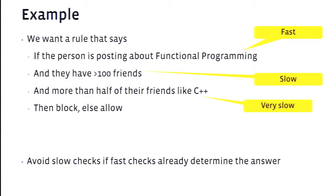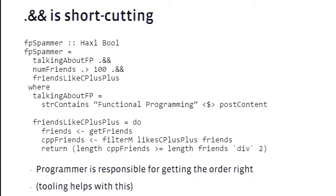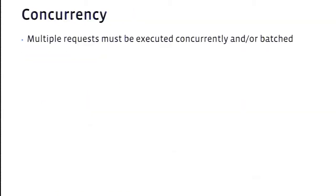We use the AND operator (.&&) to combine conditions, and it's crucial that it's short-circuiting: if the left-hand side returns false, we don't evaluate the right-hand side. The programmer is responsible for getting these in the right order. We give them tools to help: they can run their rule against sample data, look at the results, look at what data was fetched, and decide to order conditions sensibly.